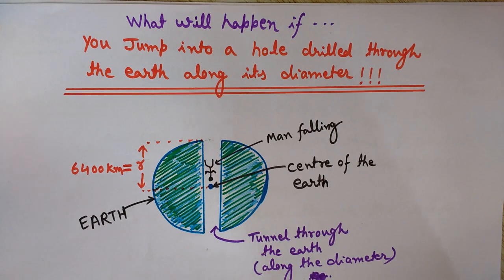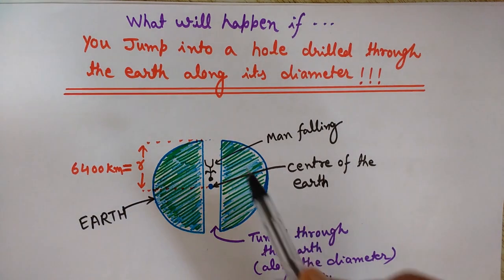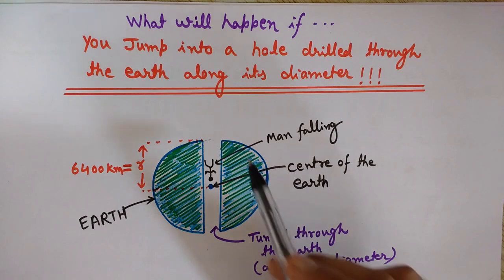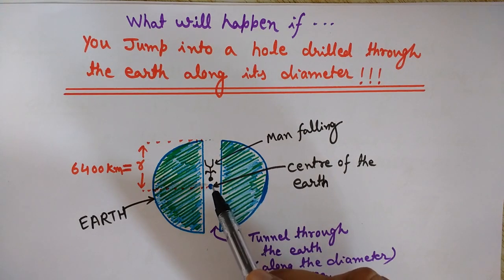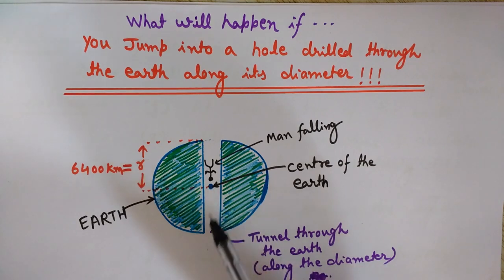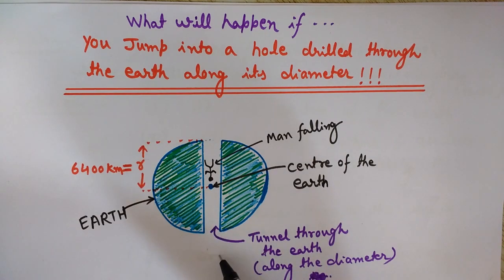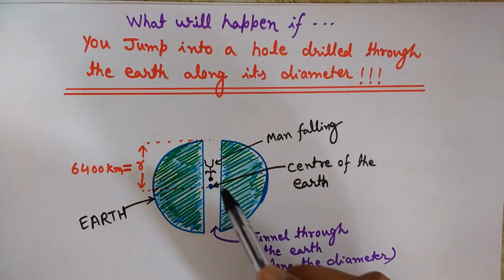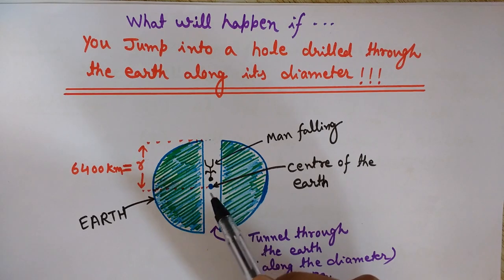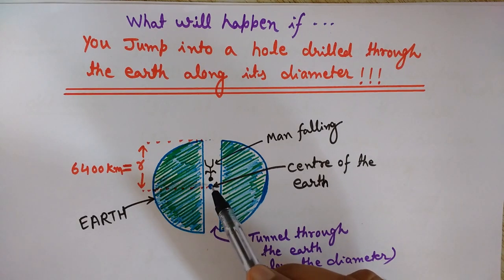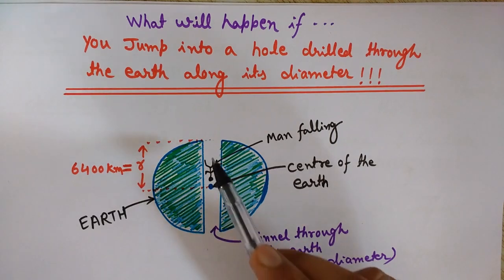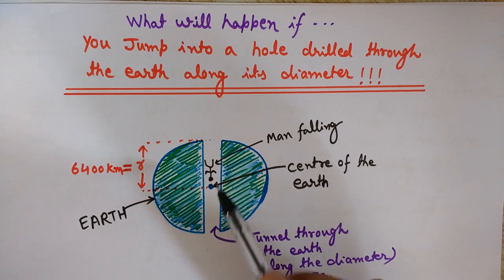Suppose there is a man who fell accidentally into this tunnel. What will be his motion? Will he stop at the center or not? If not, what will be his velocity at the center? Will he oscillate through this tunnel, be released through the south pole, or something else? We will see the complete mathematical analysis using Newton's laws and energy conservation, calculating velocity and time taken at various important points.